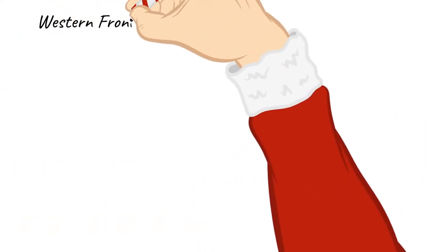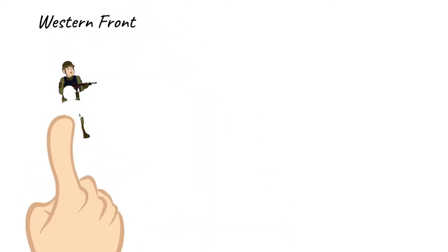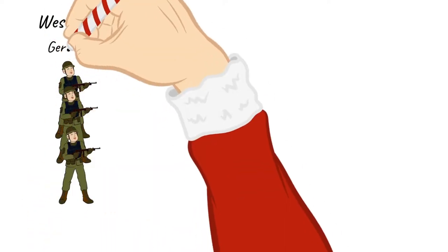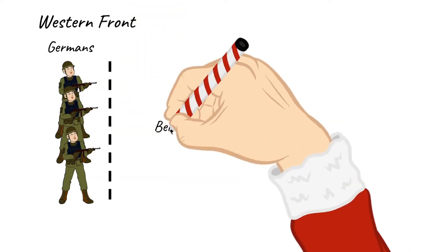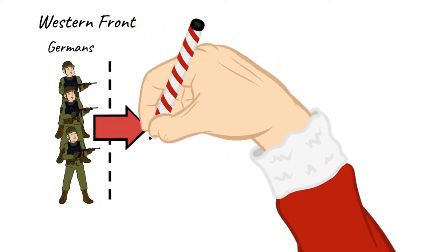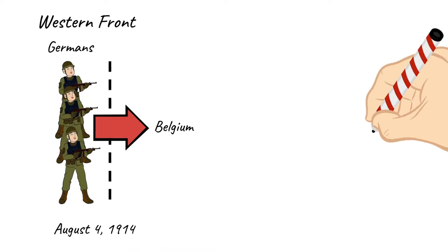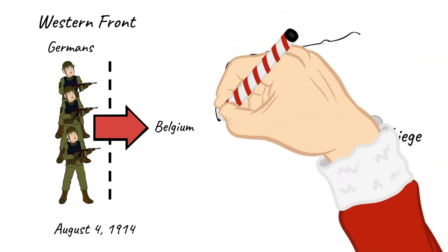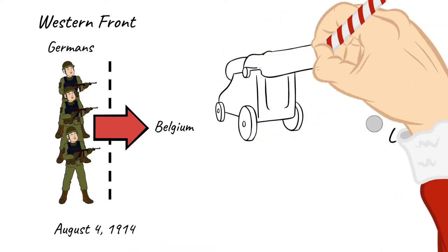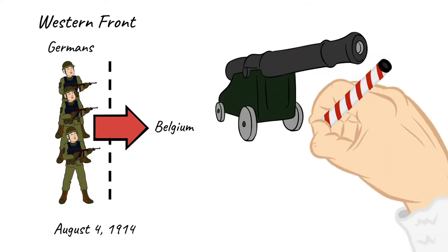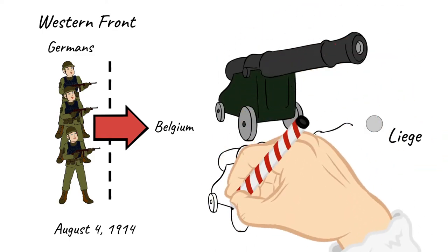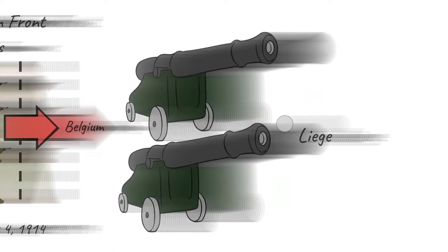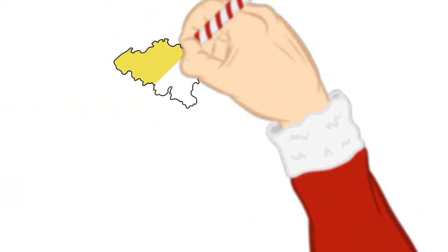On the Western Front, German troops crossed the border into Belgium on August 4th, 1914. In the first battle of World War I, the Germans assaulted the heavily fortified city of Liege, using the most powerful weapons in their arsenal — enormous siege cannons — to capture the city by August 15th.